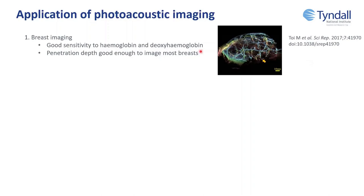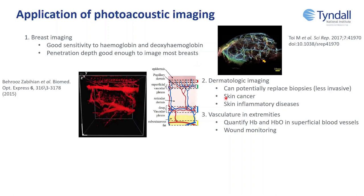Another application is dermatology imaging, or imaging the vasculature in extremities and quantifying hemoglobin and deoxyhemoglobin. For example, here you have an image of the skin showing the different layers — the epidermis, the dermis — and how the main vascularity, including big blood vessels and tiny capillaries, are organized in the skin. A photoacoustic image on the left shows the big blood vessels and the different layers of tissue.